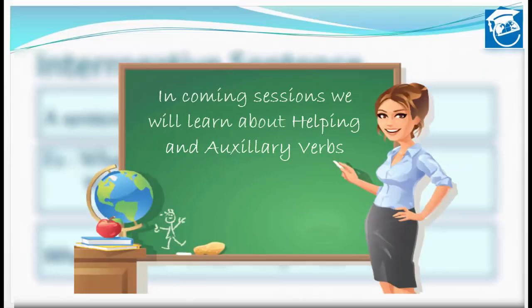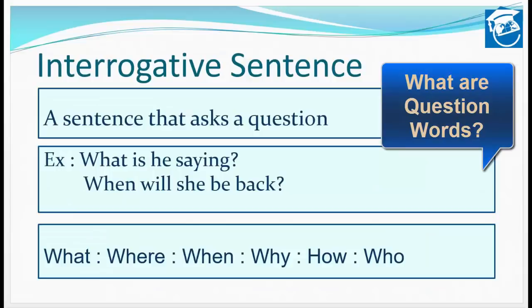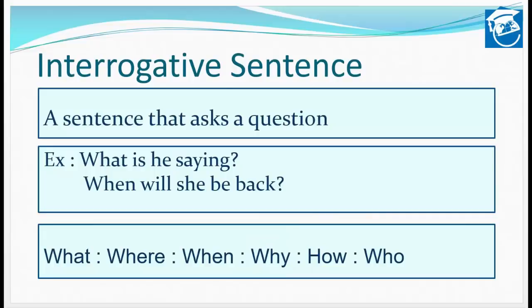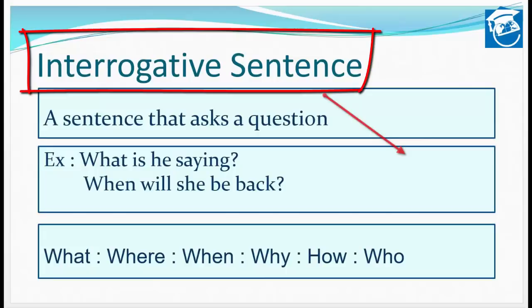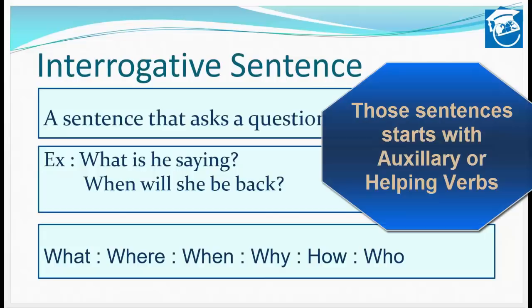The question words are: what (क्या), where (कहाँ), when (कब), why (क्यों), how (कैसे), and who (कौन)। Interrogative sentences जिनके answers descriptive होते हैं वो इन question words से start होते हैं। और ऐसे questions जिनका answer सिर्फ हाँ या ना में होता है, उनकी शुरुआत auxiliary verbs या helping verbs से होती है — जिन्हें हम आगे वाले lessons में study करेंगे।